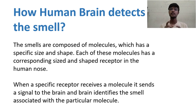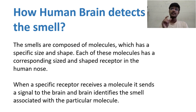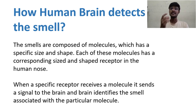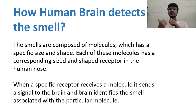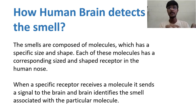Whenever the human nose senses smell, it uses something called receptors. The human nose has a different receptor for each odor. Whenever a receptor senses a smell, it converts the smell into a signal in the olfactory system present in the human nose, and sends that signal to the human brain. The human brain then processes and identifies the smell. So when a specific receptor receives a molecule, it sends the signal to the brain, which identifies the odor.